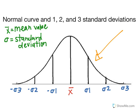Bar x represents the mean value and is the highest point on the curve. Sigma is a Greek letter that means standard deviation.